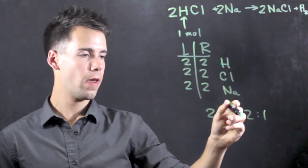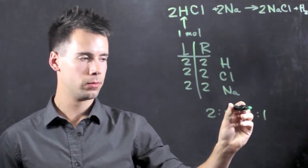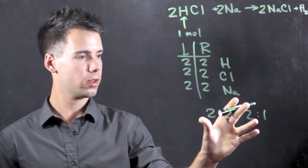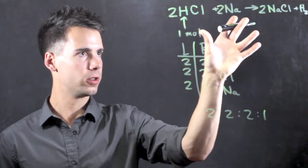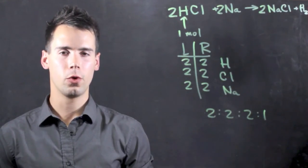So you would end up with one, one, one. But in this case, one is the lowest common integer denominator. So this is the correct form. These are the correct coefficients. I'm Ryan Ault, and this is the Easy Way to Balance Chemical Equations.